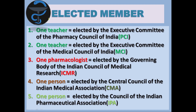The second major group is elected members; there are five. The first is one teacher elected by PCI. The second is another teacher elected by MCI. The third is a pharmacologist elected by the governing body of the Indian Council of Medical Research. The fourth is a person elected by the Central Council of Indian Medical Association. The last is elected by the Council of the Indian Pharmaceutical Association.